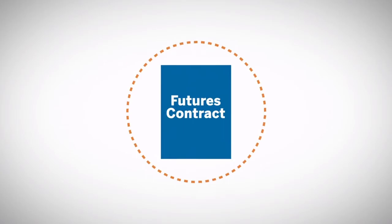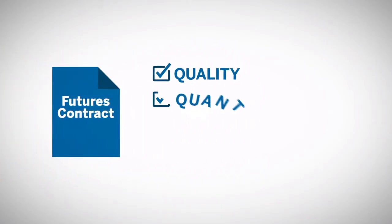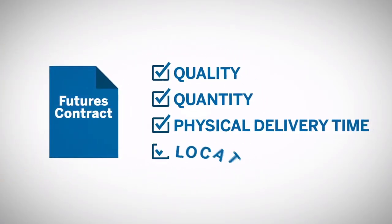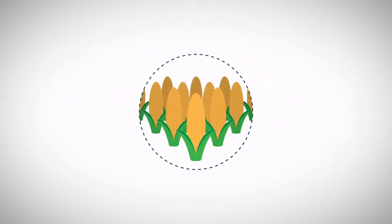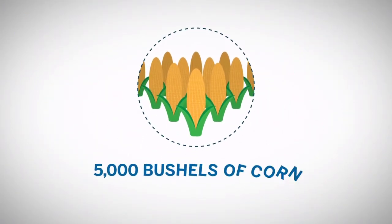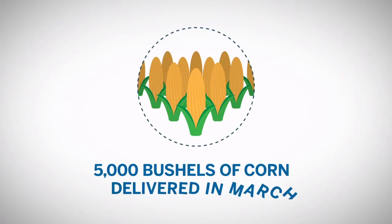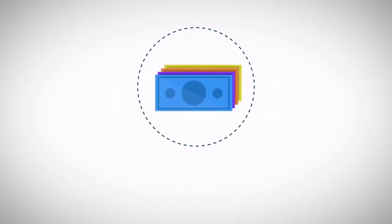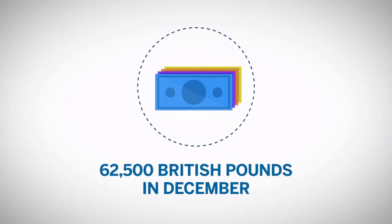An exchange-traded futures contract specifies the quality, quantity, and physical delivery time and location for the given product. This product can be an agricultural commodity, such as 5,000 bushels of corn to be delivered in the month of March, or it can be a financial asset such as the U.S. dollar value of 62,500 British pounds in the month of December.